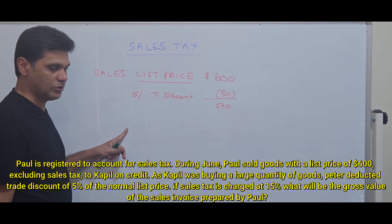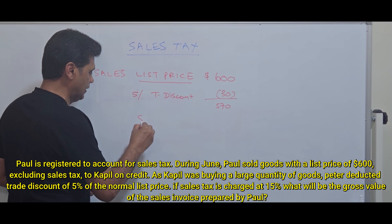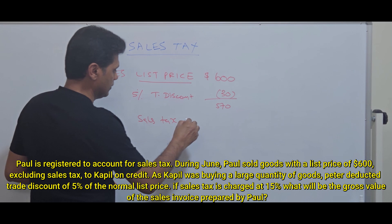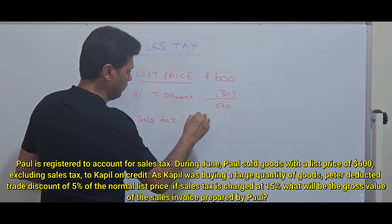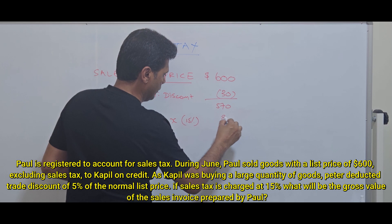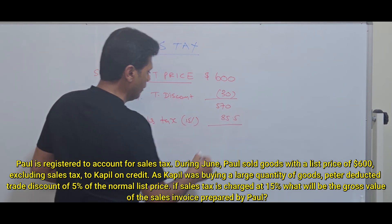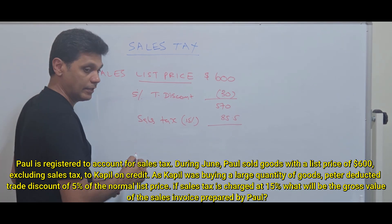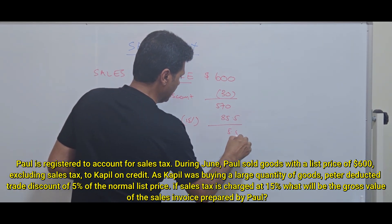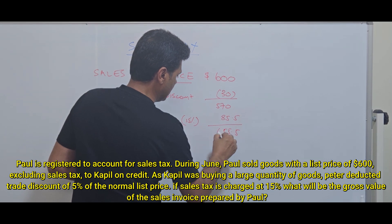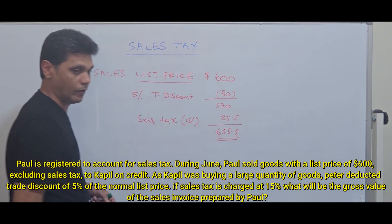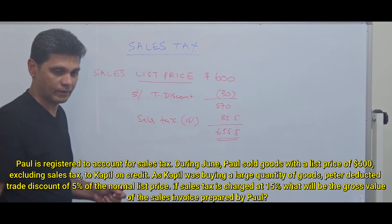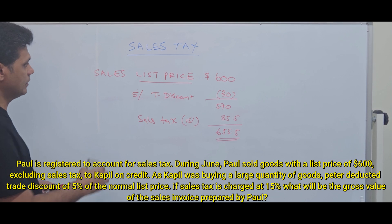So how much has been charged as sales tax? 15%. So how much is that? $85.50. So what will be the total value of the sales including tax? $655.50. Correct. So this is the answer for the first part.